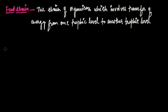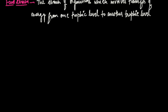The transfer of energy from one trophic level to the next trophic level is called a food chain, in which transfer of energy occurs in a series. It starts from one trophic level which can be plants, to another trophic level which can be animals — herbivores and carnivores. So the chain of organisms involving transfer of energy from one trophic level to another is called a food chain.